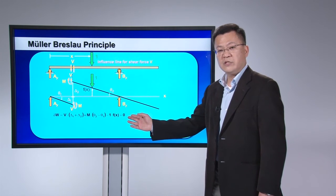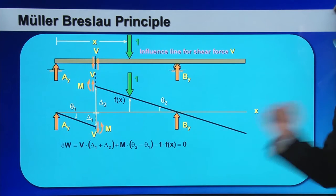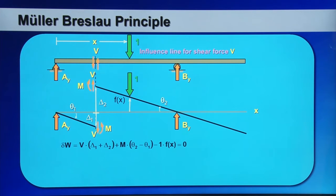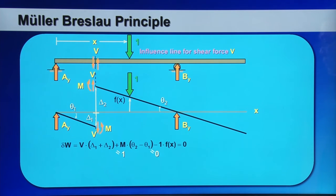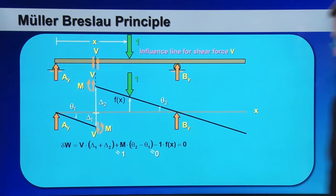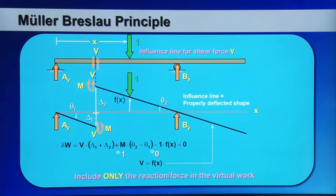According to the virtual work principle for a rigid body structure in equilibrium, delta W equals zero. Since we are looking for the shear force influence line, we need to eliminate the bending moment M from the virtual work expression. Setting theta two equal to theta one causes the moment terms to cancel. Further, if we set delta one plus delta two equal to one, the result gives V = Fx — the profile of the deflected shape — confirming this is the influence line for shear force V.